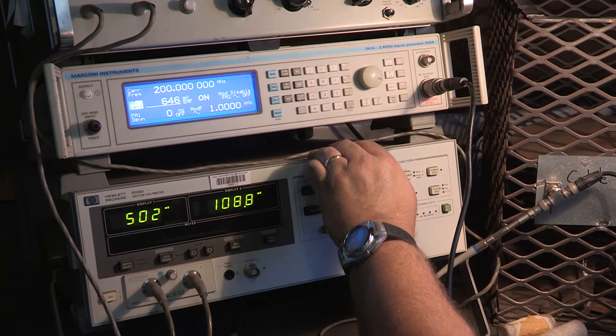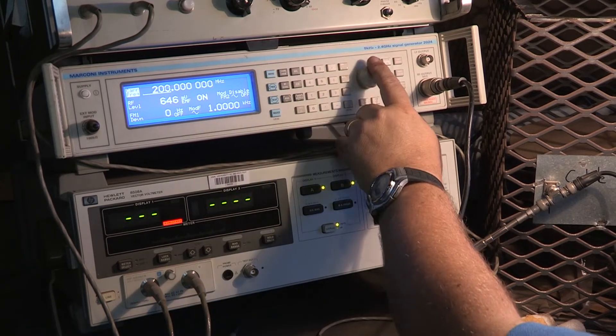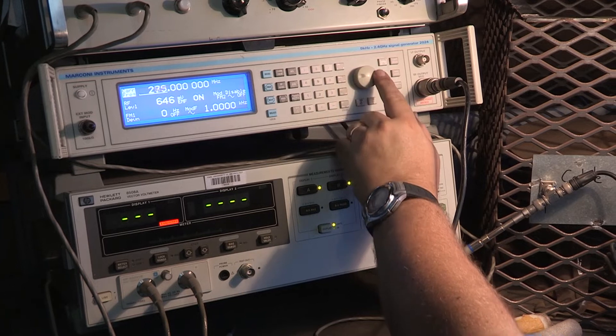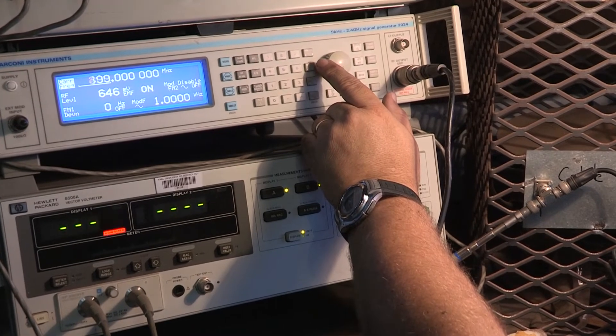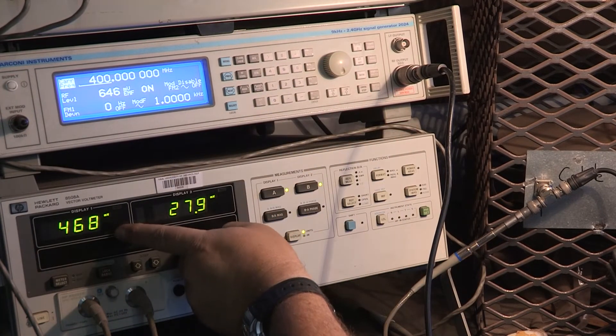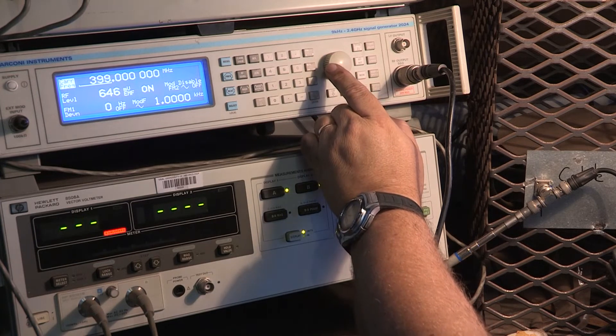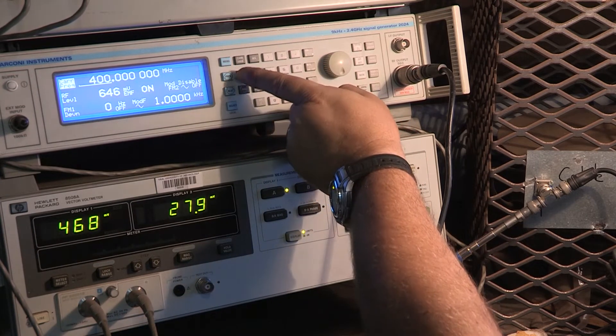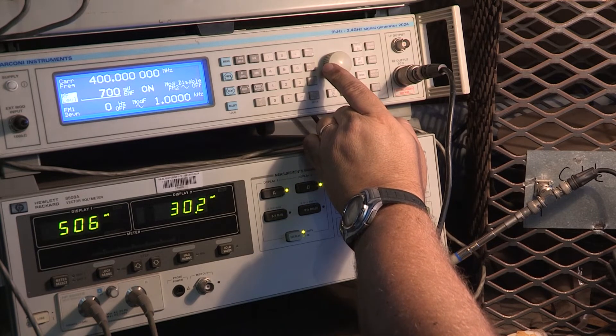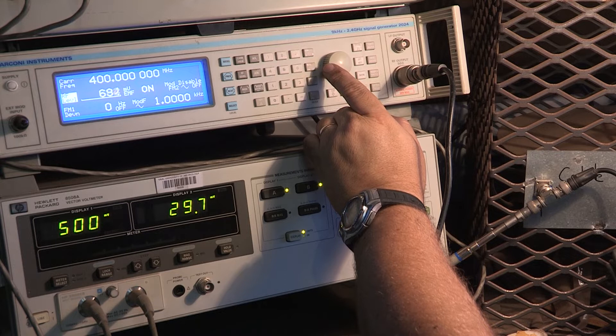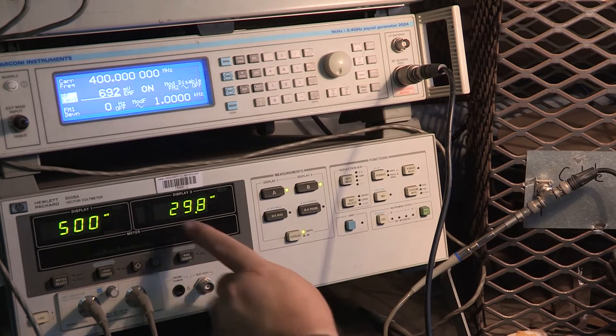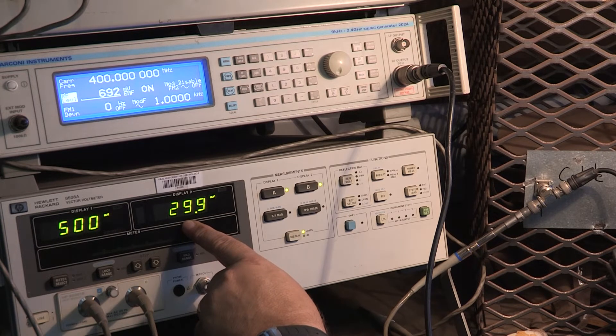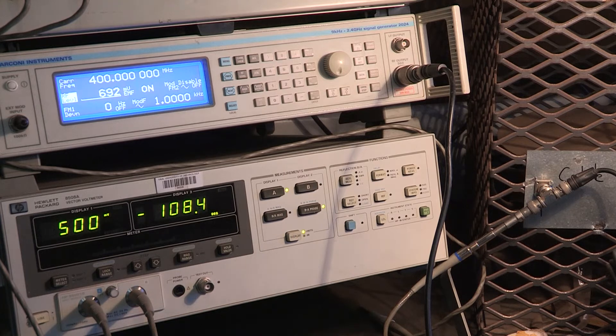Next frequency, a nice leap into the future, 400 megahertz. Making sure that the input channel, channel A, is set up correctly to 500 millivolts. As close as you can get it is fine. So from 100 millivolts, it drops to 29.9 millivolts. The phase angle sweeping right over to minus 108.3 degrees.